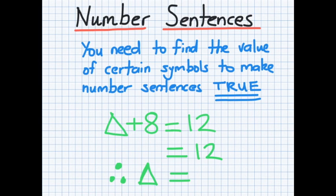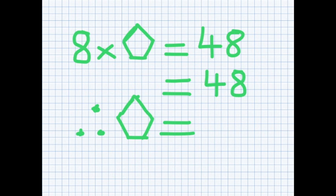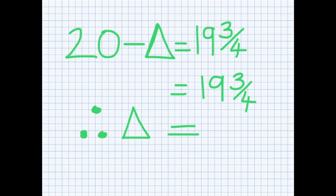In some number sentences you need to find the value of certain symbols to make the number sentence true. Here we've got triangle plus eight equals twelve — there's a mystery number plus eight which equals twelve. Four plus eight gives me twelve, so therefore triangle is equal to four. Here we've got eight times a pentagon, a five-sided figure, equals forty-eight. Knowing our times tables, eight times six equals forty-eight, so therefore pentagon is the value of six.